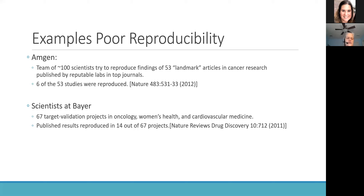In the Amgen study of the 53 studies they examined, their team of scientists were only able to reproduce six of 53 — slightly greater than 10%. The second study, conducted by Bayer, examined more disease conditions and looked at 67 different articles, and they were able to reproduce 14 out of 67 results — at about a rate of 20%, but still not great. This brought the issue of reproducibility to the scientific community's attention.